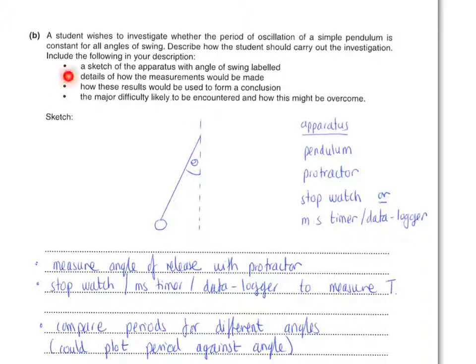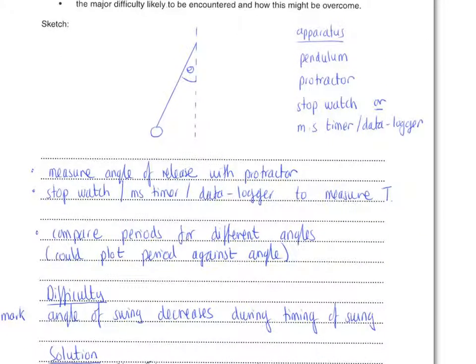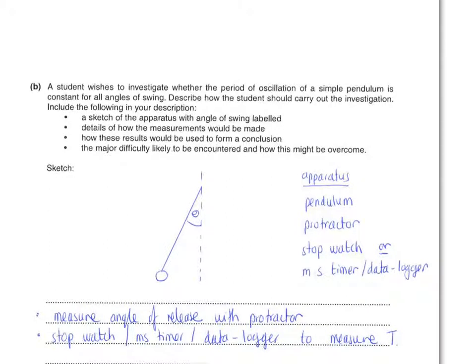The next bullet point is how the measurements would actually be made. So you need to measure the angle of release with a protractor, and then you need to state what you are using to measure your time period. Now the most obvious mark here, that is easily missed, is this one. How these results would be used to form a conclusion.